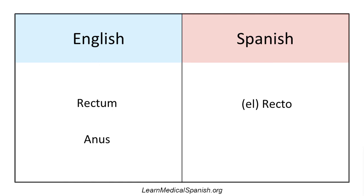Next word is anus. El ano. El ano. And this is why it's important to put that tilde on the N when writing the word for year, which is año, because if you leave off the tilde, then it means anus — so you don't want to make that mistake.